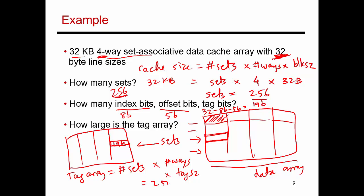This is 256 times 4 times 19 bits, which works out to 19 kilobits.